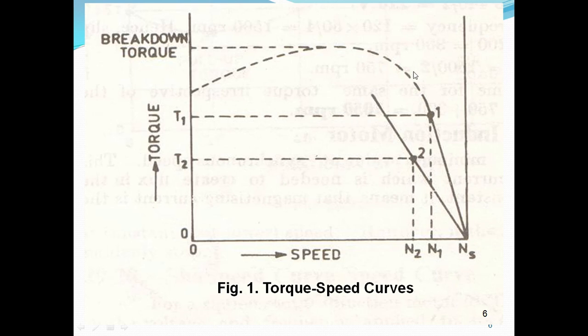Speed is on the x-axis and torque is on the y-axis. This is the breakdown torque, also called the maximum torque.